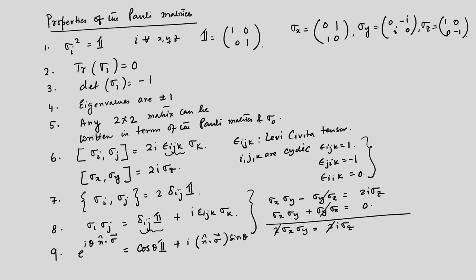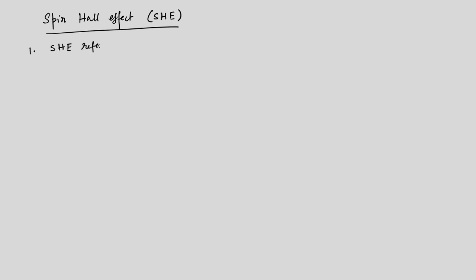These are some properties of spins, introduced because we are going to talk about spins now — which we have ignored so far while discussing quantum spin Hall effect. Let us go back to the discussion of spin Hall effect. It is abbreviated as SHE, and there is also the inverse spin Hall effect, or ISHE.